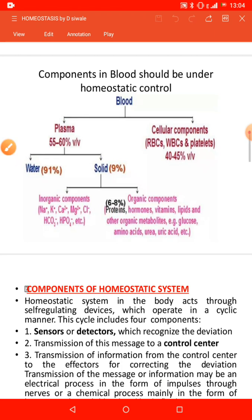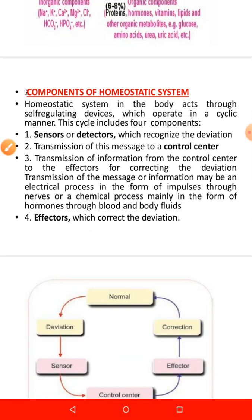Every homeostatic mechanism, or the self-regulating system, includes four components. Number one: sensors or detectors, which recognize the deviation. Sensors are part of the nervous system — the neural components.